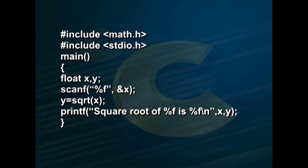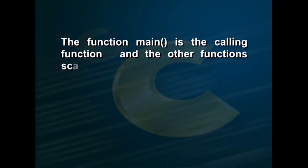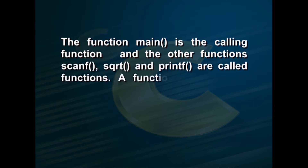Let us now consider an example. The program includes math.h and stdio.h. Within main, we declare float x and y, use scanf to read x, then y is equal to sqrt(x), and printf prints the square root. The main function invokes or calls other functions within it. Here, three functions — scanf, sqrt, and printf — are invoked by the main function. The function main is the calling function and the other functions scanf, sqrt, and printf are called functions.